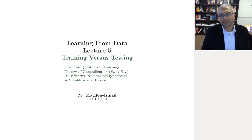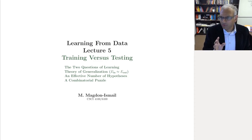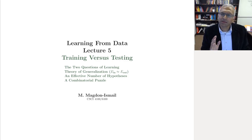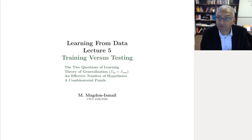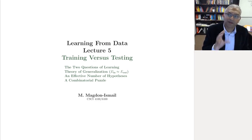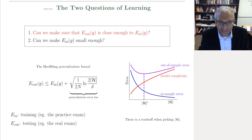Hi there, welcome back. This is lecture 5 of Machine Learning from Data, where we're going to begin our discussion of training versus testing. Basic question: does E-out approximately equal E-in when you're learning with an infinite hypothesis set? This is a nice lecture because at the end I'm going to give you a combinatorial puzzle to work on, so stay tuned. But first, let's talk about where we were from last time.